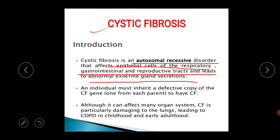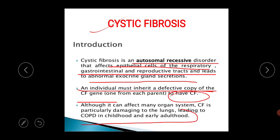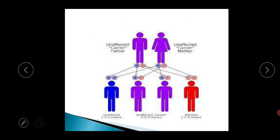Due to this glycoprotein, a mucus of abnormally high viscosity is produced. Because of this high-viscosity mucus, exocrine glands like sweat glands of skin, lungs, liver, and pancreas start functioning abnormally. An individual must inherit a defective copy of the cystic fibrosis gene from each parent to have cystic fibrosis. This CF is particularly damaging to the lungs, leading to COPD in childhood and early adulthood.